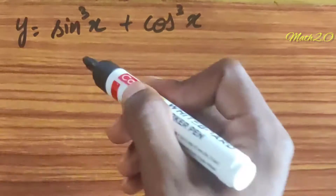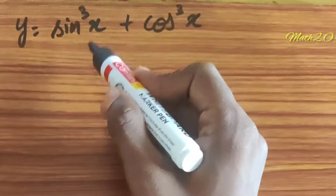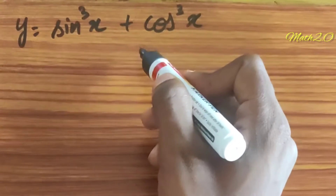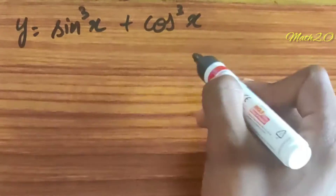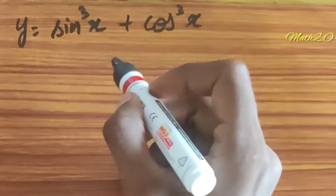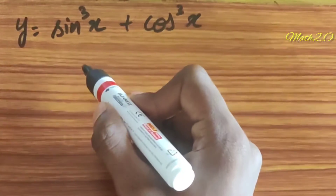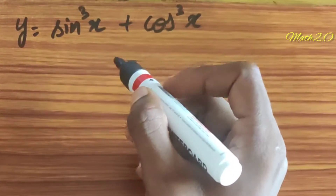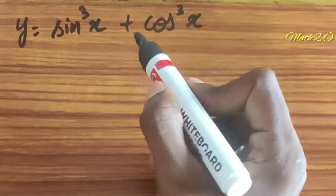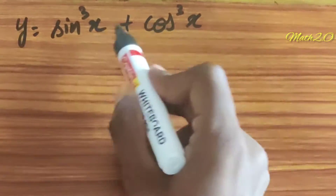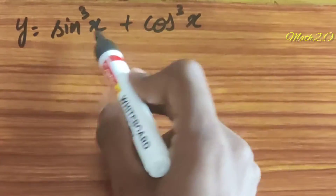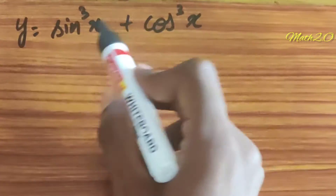So y is equal to sin cube x plus cos cube x. How do we differentiate here? Let's see if it's interesting. This function is the sum of terms.